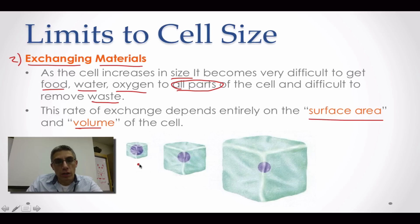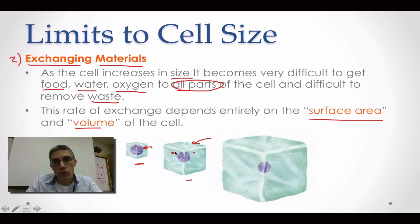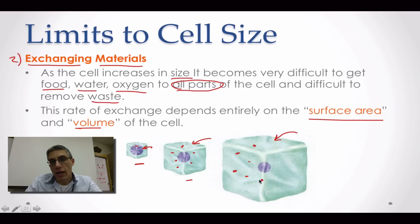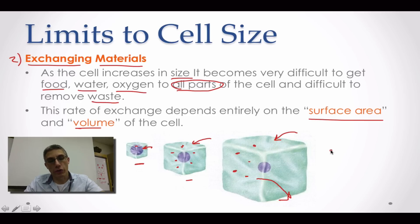If you have a cell that's really small, it's a lot easier to get materials to the different parts that need it. But as the cell gets larger, it becomes even more difficult for material to get where it needs to go and even more difficult to move waste material out of the cell. So exchanging materials is really important to the health of the cell.